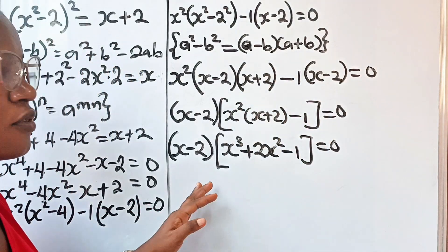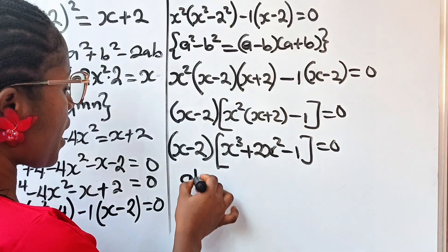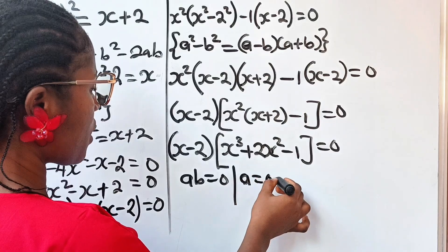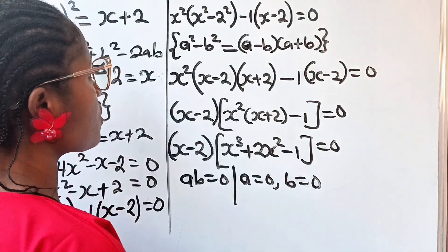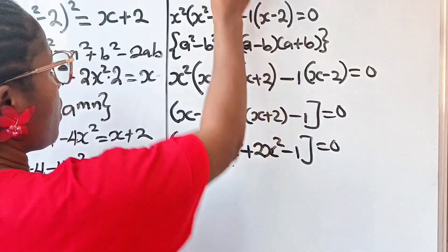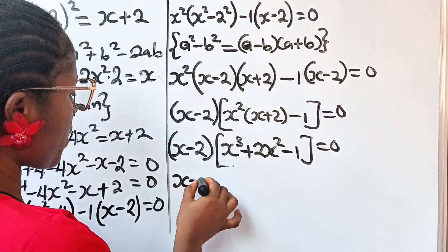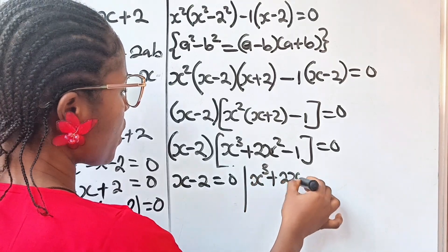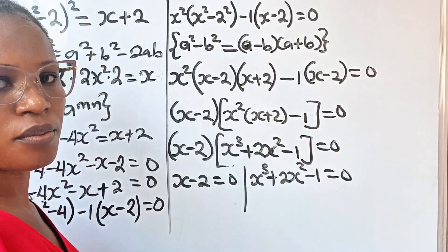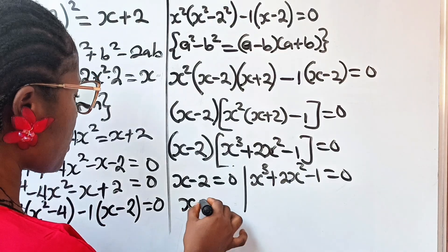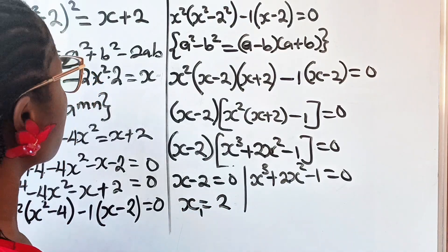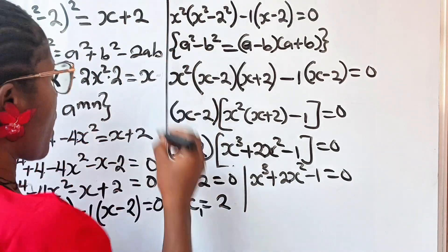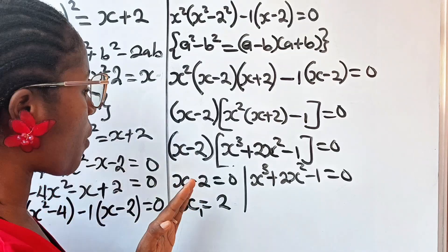Since the product equals zero, either factor can be zero. From x - 2 = 0, we get x = 2. That is the first value of x.